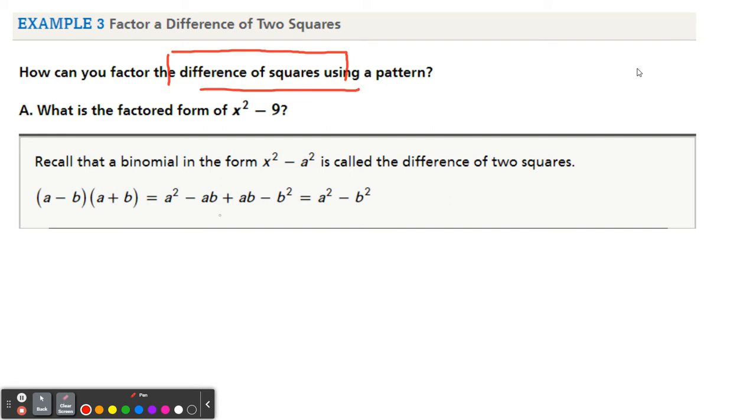So now remember, the biggest thing about difference of two squares is that the middle term cancels. You only have what's called a binomial here. Two terms, not a trinomial.